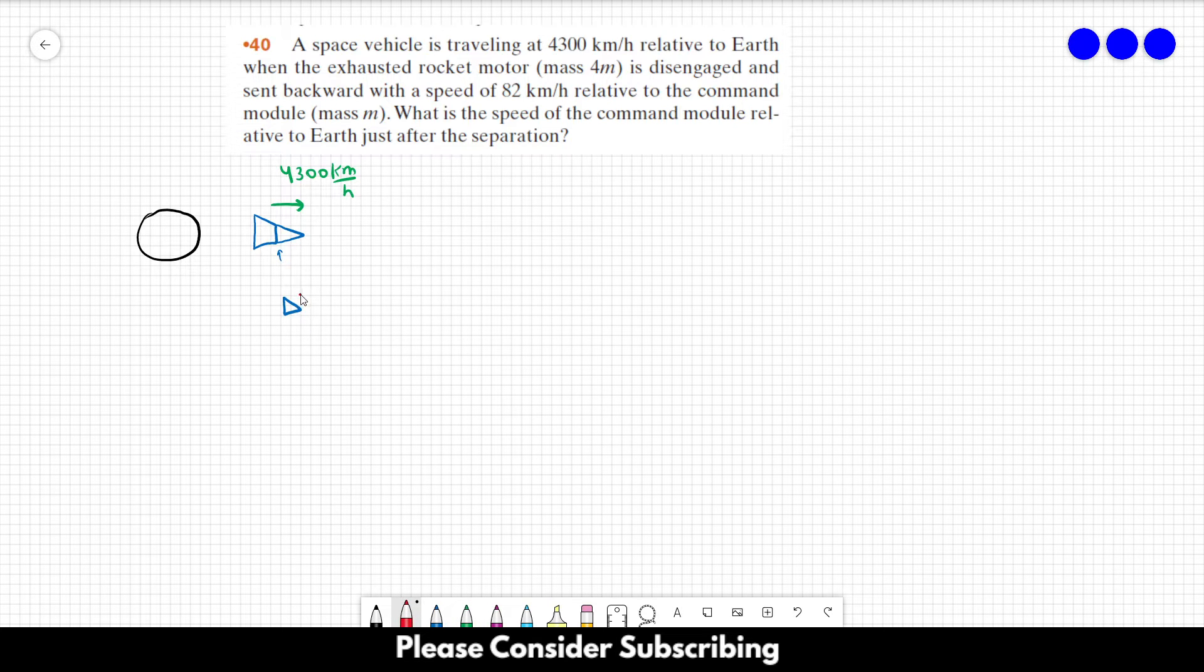The command module will keep going with some speed v, and the rest of the rocket will still go in the same direction as v but with a smaller value. In this case, it will be v minus 82 kilometers per hour. So this is what's happening here.